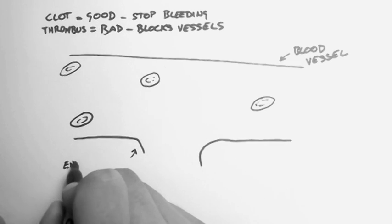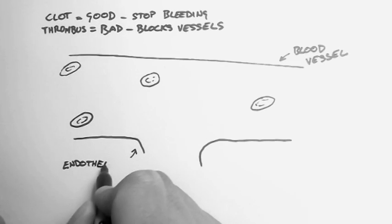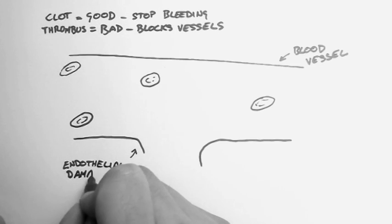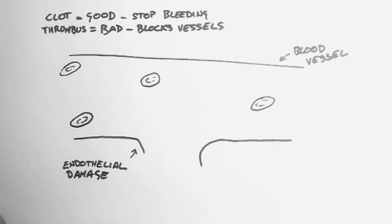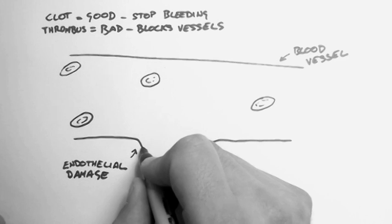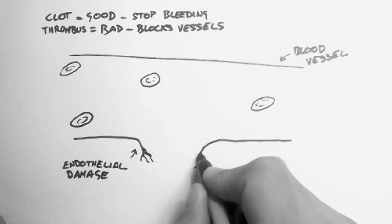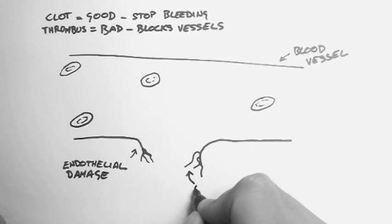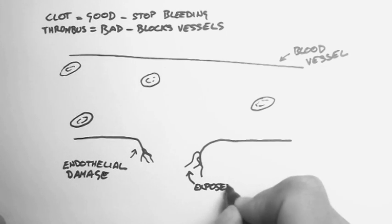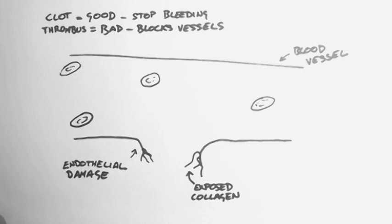Now this is a bit of damage to the endothelium. The endothelial cells are the cells that make up the blood vessel walls. So if you get some damage to those, for instance, a break within the vessel wall, then you'll get a bit of collagen exposed here. Collagen is a protein which is integral to the structure of vessel walls.